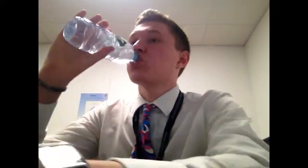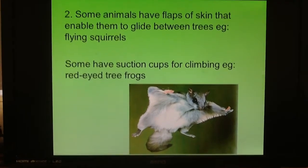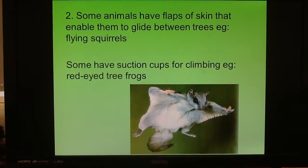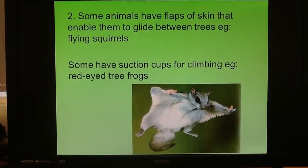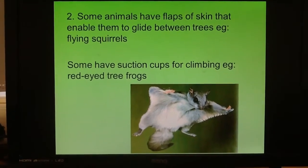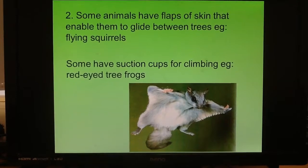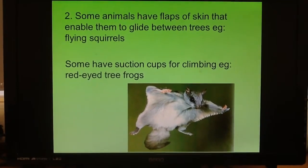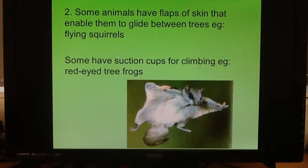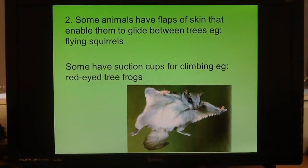Number two: rather than having strong arms and legs, another way to get from branch to branch is, firstly, having flaps of skin that allow you to glide through the air between trees — that's what flying squirrels have. Or secondly, some animals have suction cups that allow them to grip hold of branches, which includes certain species of frog such as the red-eyed tree frog.